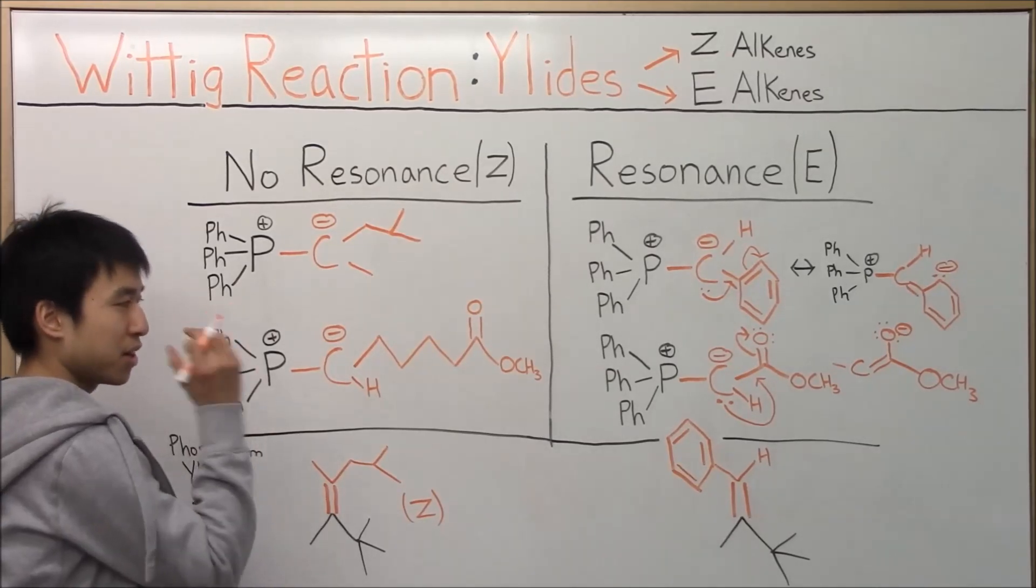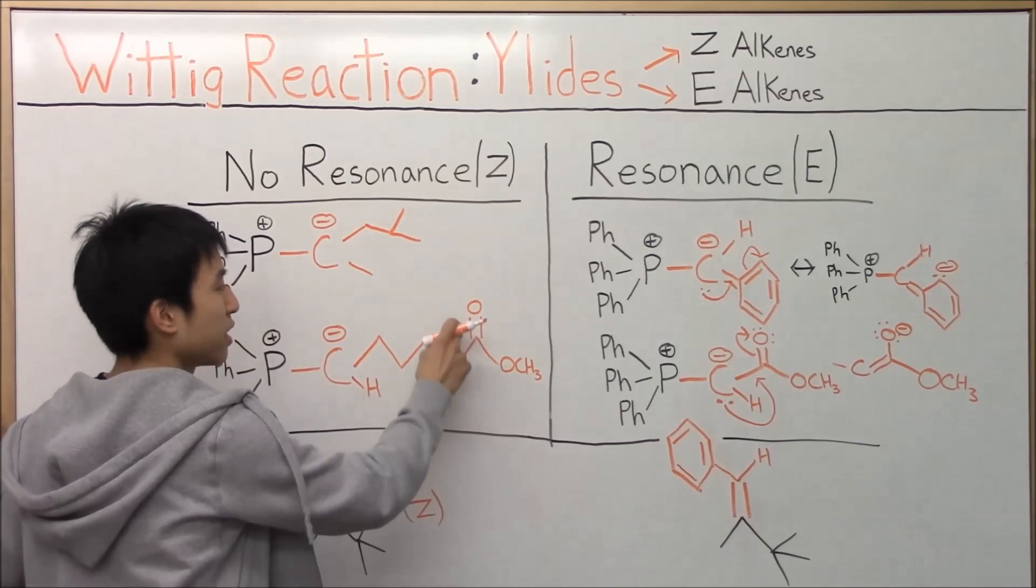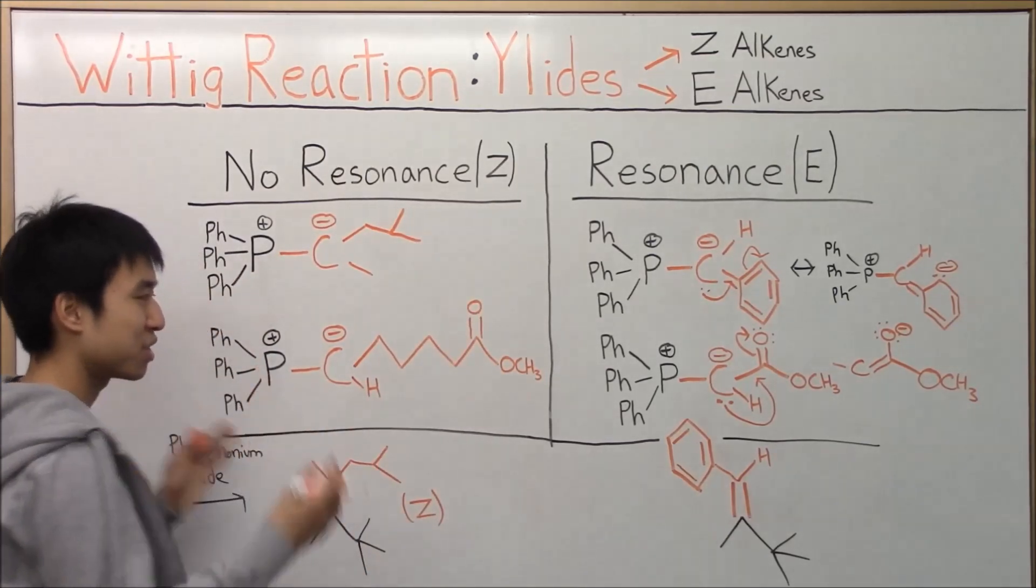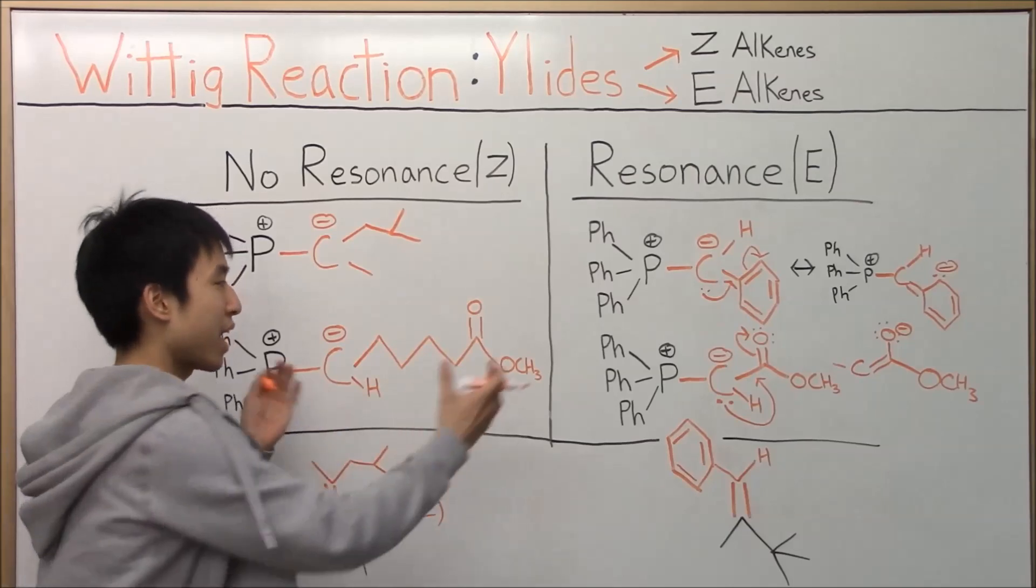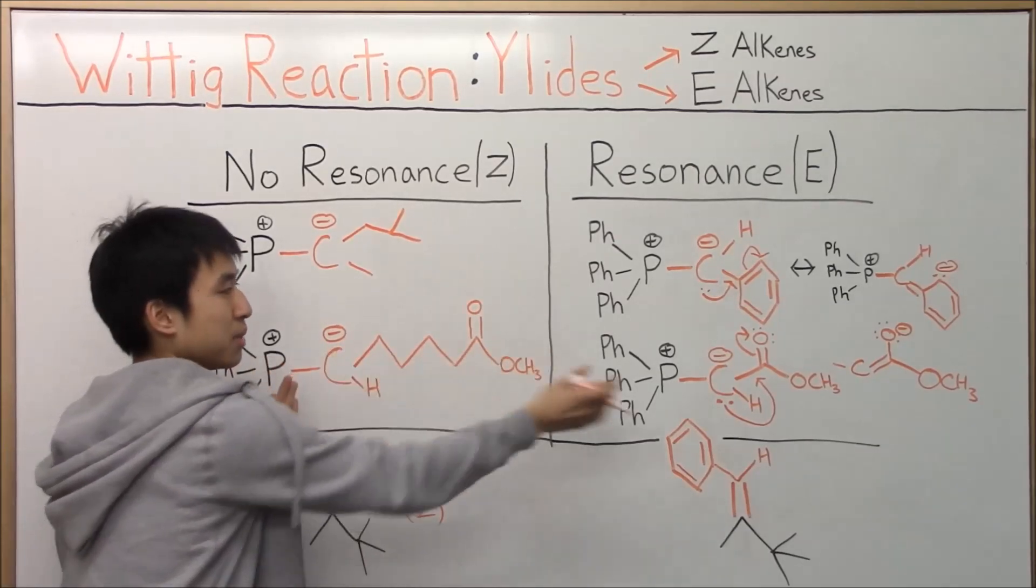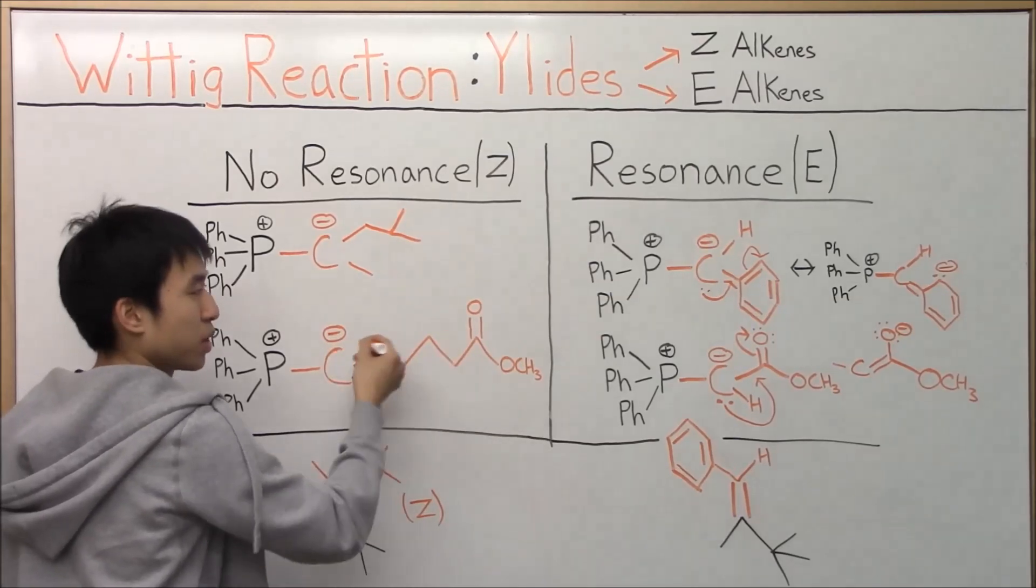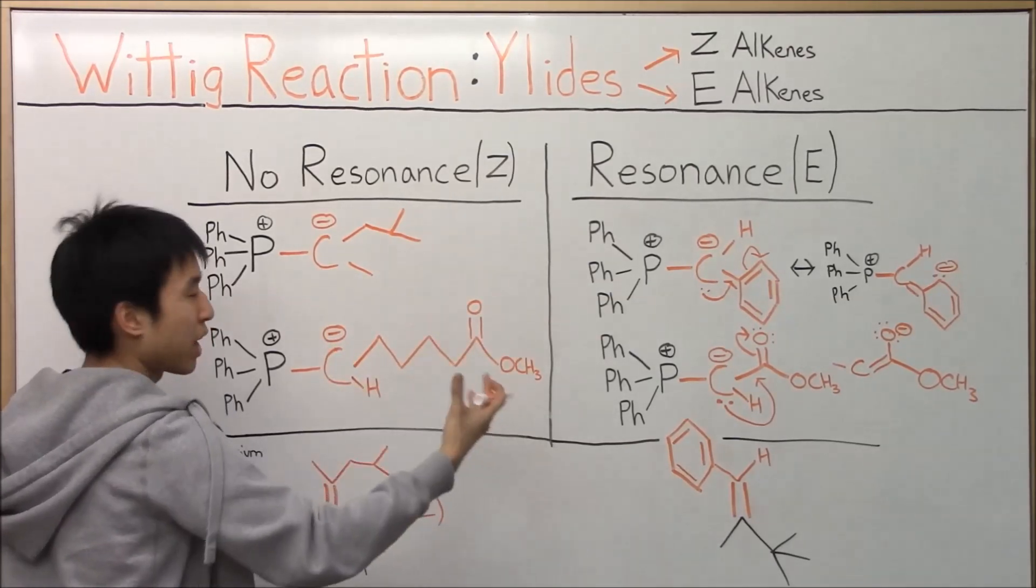And then for the no resonance ones, oh yeah, I really wanted to stress, you see how this one here, technically there's a resonance that can occur here? Well, the issue is that you can't just have resonance in your molecule. It has to be next to the carbanion. It has to be close so that resonance can occur between your carbon and whatever resonating group you have.